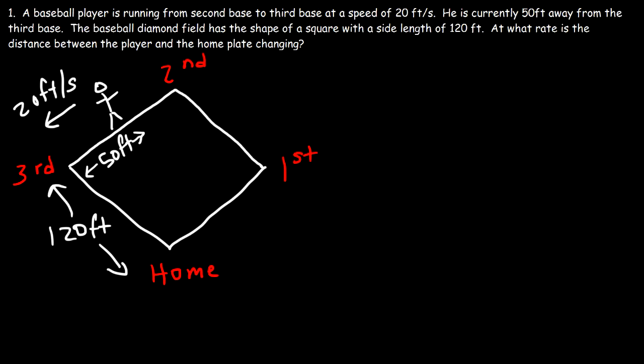Now our goal is to focus on the rate at which the distance between the player and the home plate is changing. Notice that we have a right triangle. Let's redraw the picture somewhere on the side here. Let's call this x, y, and z.